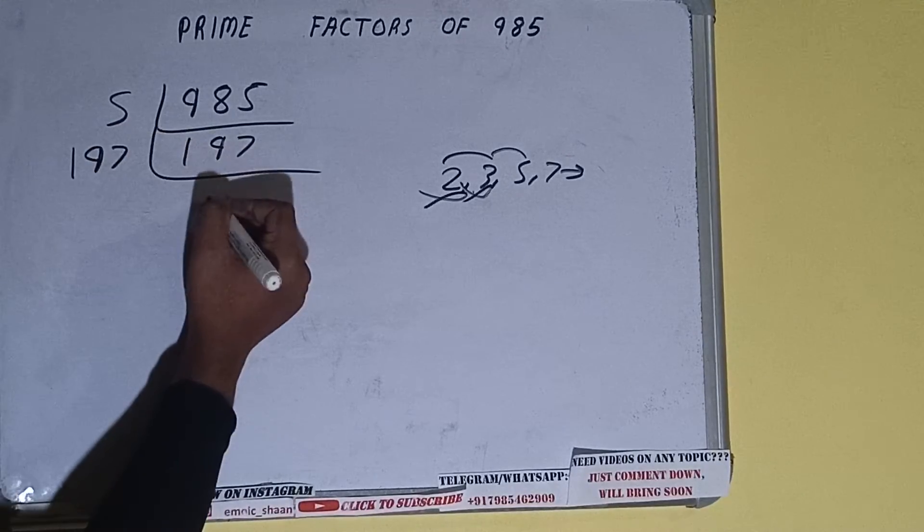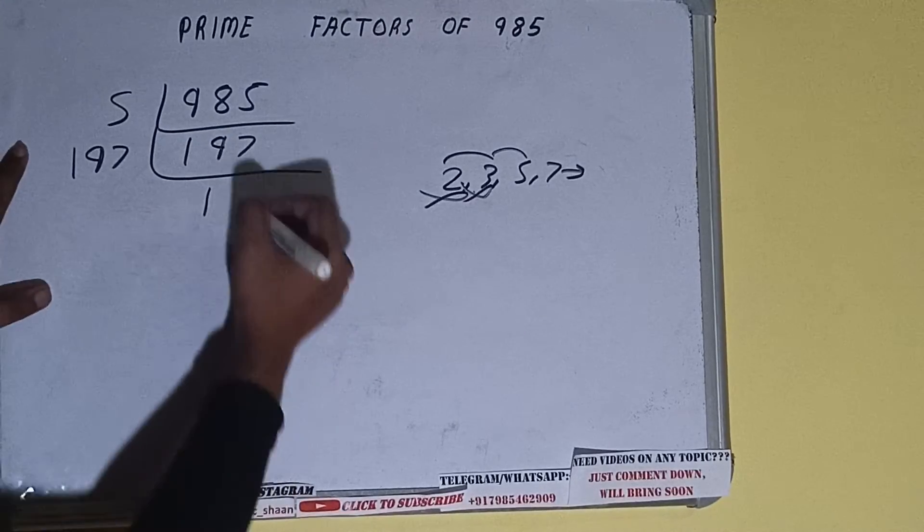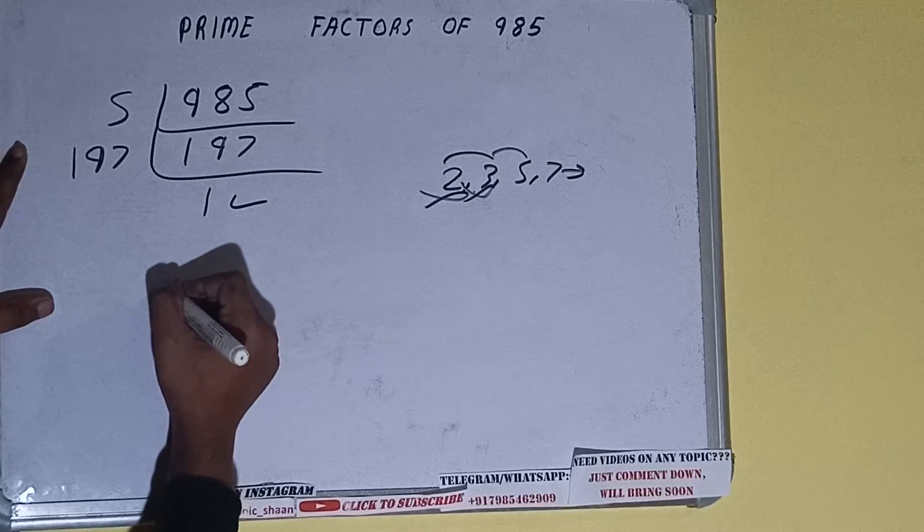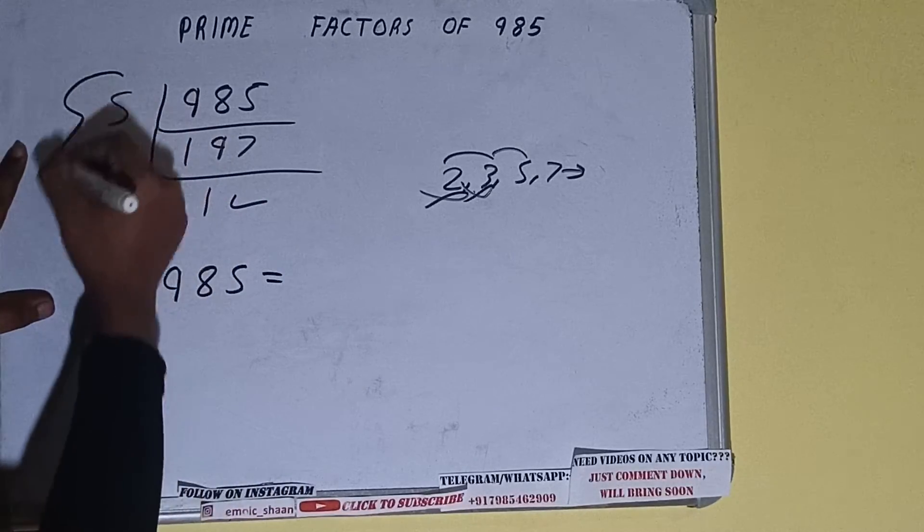And once we do so, we'll be getting one. Once we get one, we need to stop and do one last thing: the prime factors of 985 equals multiply whatever we have on the left-hand side, that is 5 times 197. That will be the answer.